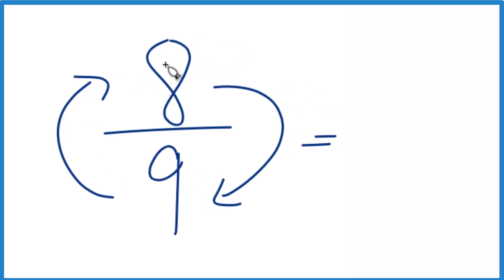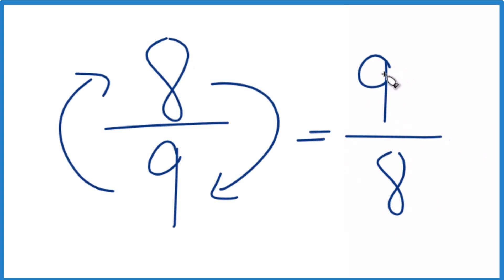So for eight-ninths, we get nine on top, that's our numerator, and we get eight on the bottom. So the reciprocal for eight-ninths is nine-eighths.